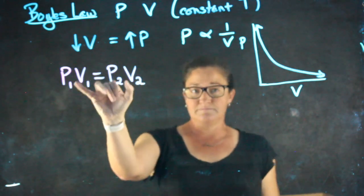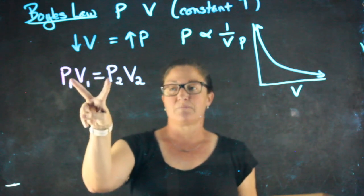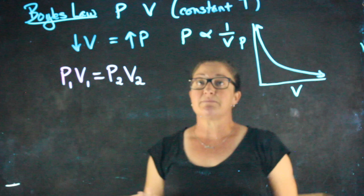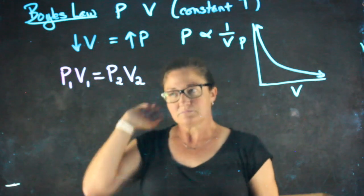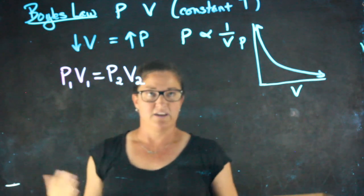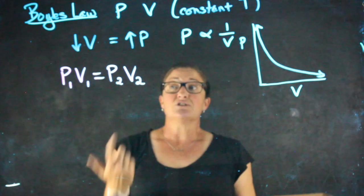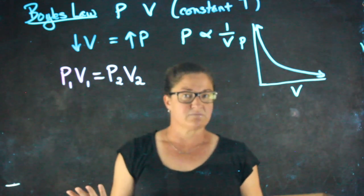Whenever we use a formula that has something on both sides of the equation like pressure or volume, we have to make sure that we're in the same units. So if one pressure is an atm, the other one has to be an atm and so on. We're going to talk now about Charles' law and then Gay-Lussac's law before we do some practice problems.